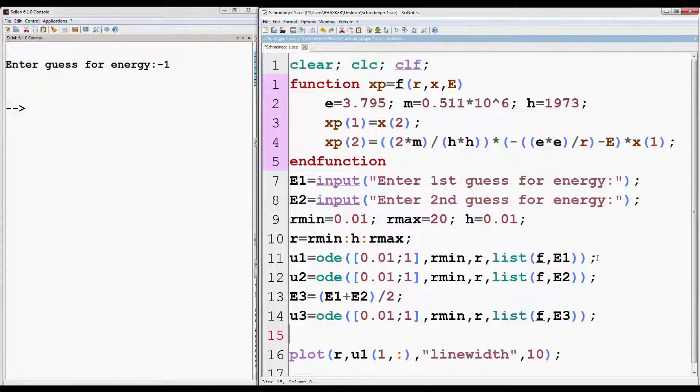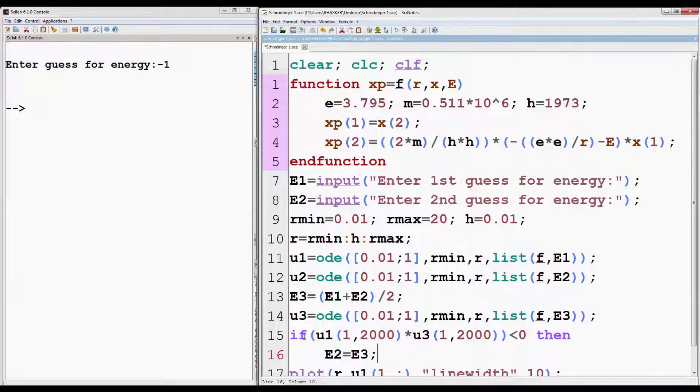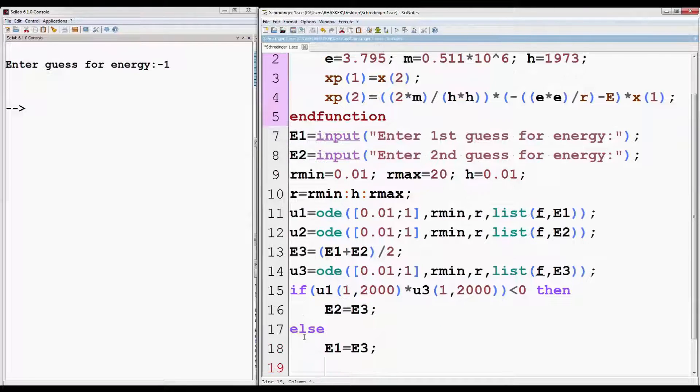Now again solve the differential equation with energy E3. Next we have to test the sign of the product of last value of U1 and U3 also shown on the left. Now r max is 20 and h is 0.01, so there will be 2000 columns in vector r. So U1, U2 and U3 must also have 2000 columns. So the last value of U1, U2 or U3 will be at 2000 column of first row. So it's written U1 bracket 1 comma 2000. 1 denotes row, 2000 denotes column. Now if the sign is negative then E2 should be replaced, else E1 should be replaced by E3.